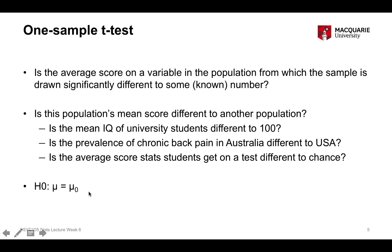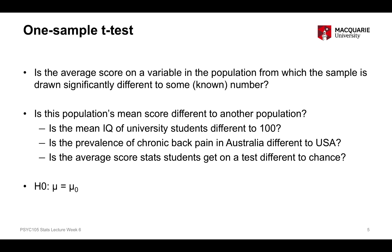Mu is a Greek symbol representing a population mean score. The first mu is the population mean from which our sample was drawn, and mu-zero is our known external average — the test value we're comparing against. The null hypothesis always states there's no difference. So here it says there's no difference between our population mean and the external test value.